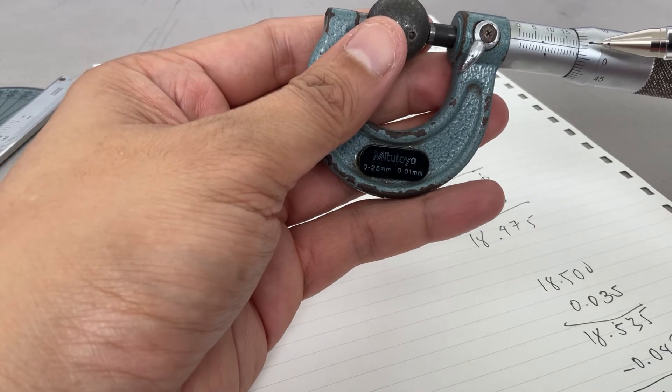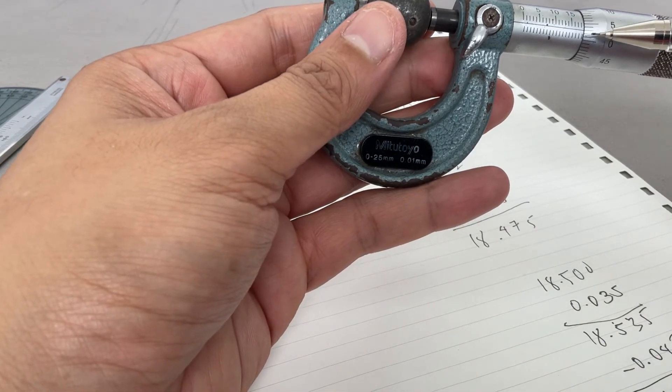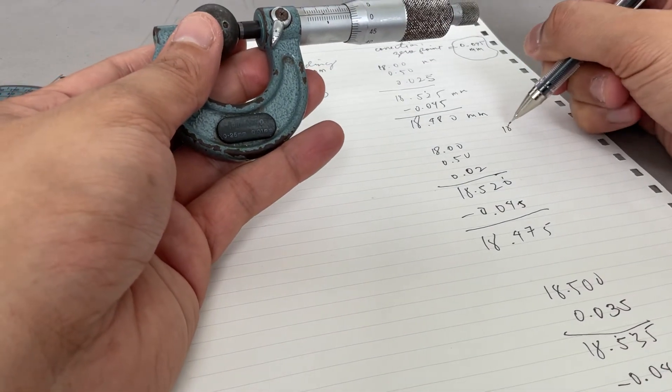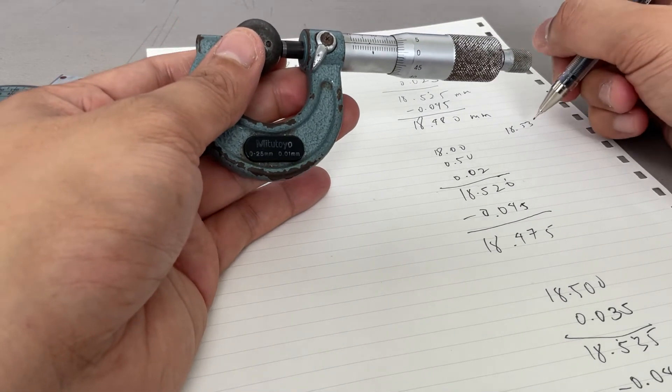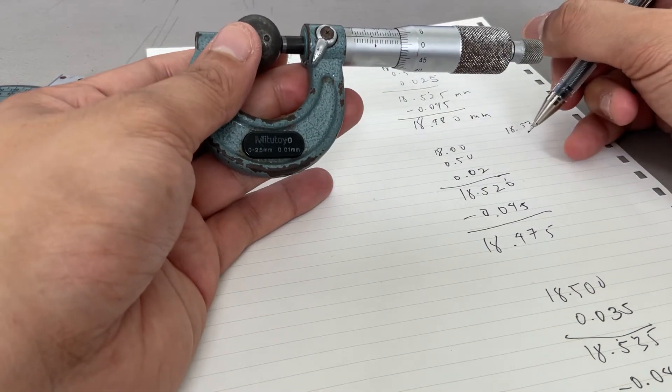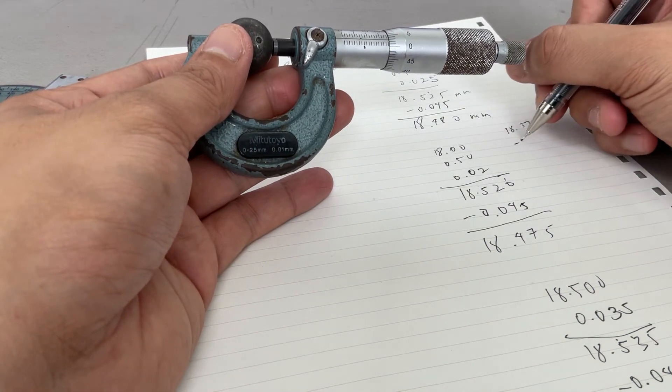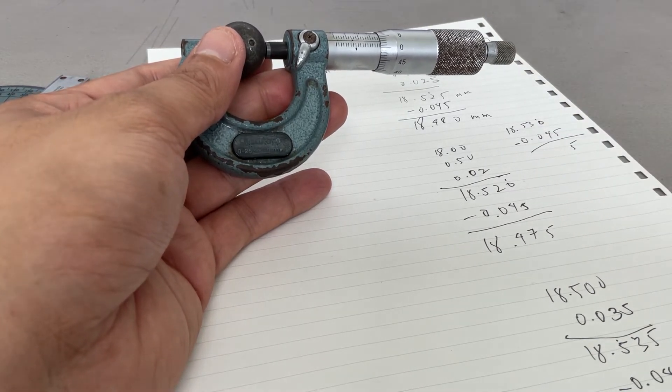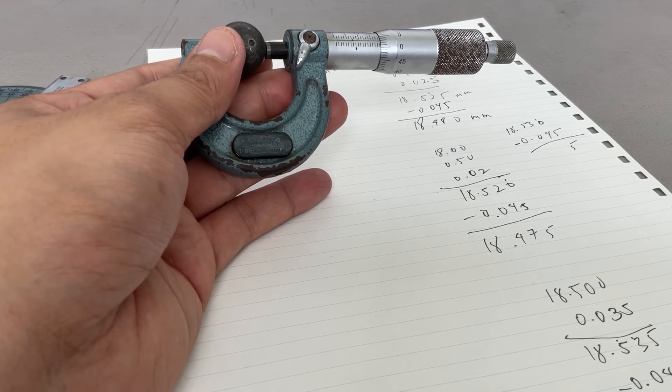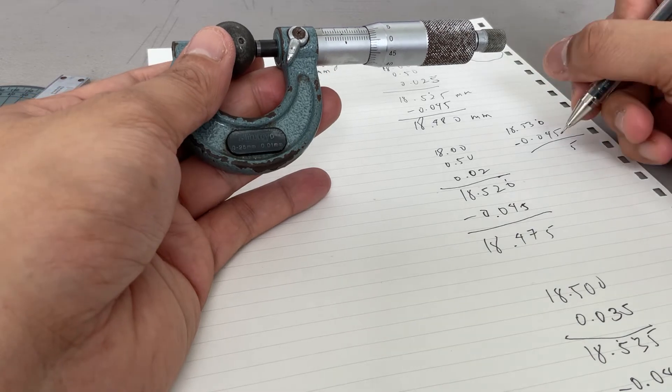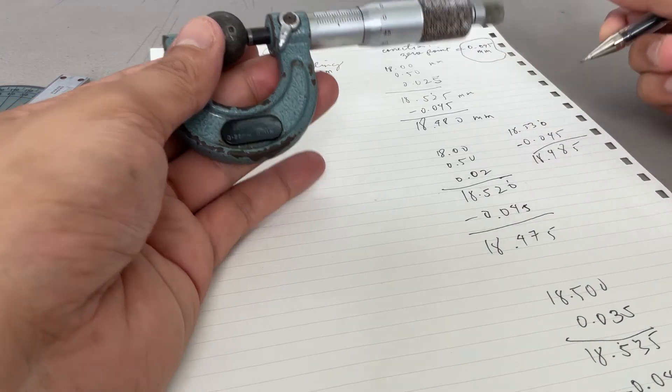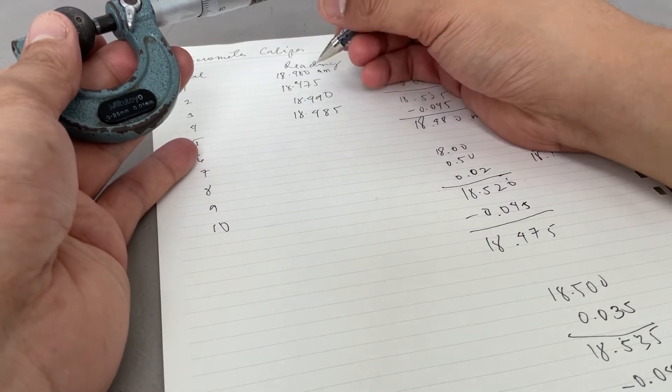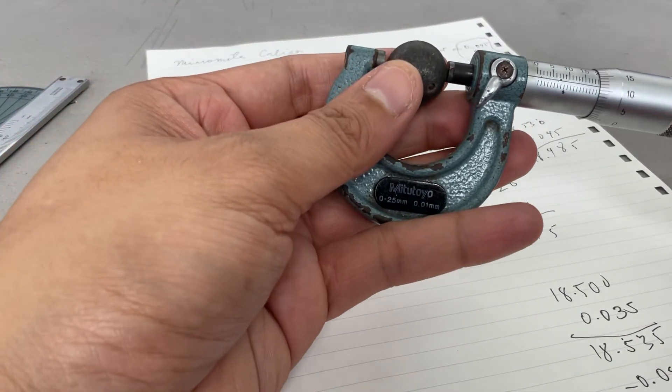Look at that - perfectly aligned. So 18.53. I'll go straight - I know already that it's 0.53, but you have to deduct 0.045. So 18.485. Very precise. Let's try another one.